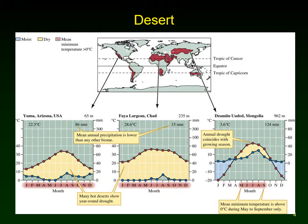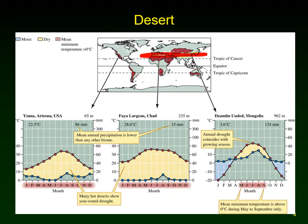Looking at the distribution of deserts, we can see those bands at approximately 30 degrees north and south of the equator. We also see deserts in the rain shadows of mountains — where water has been emptied out of the air after coming from the oceans and being pushed up the mountains. When you get to the other side of the mountains, there's no water left.